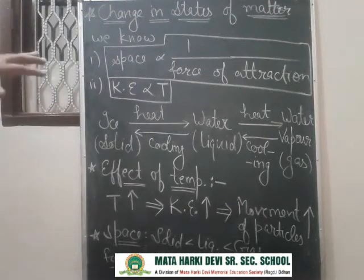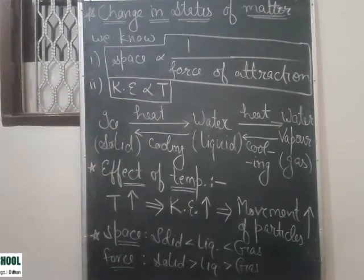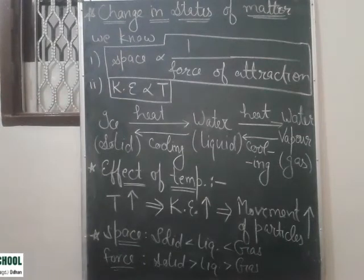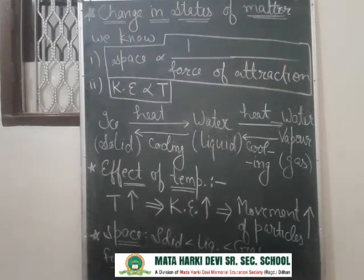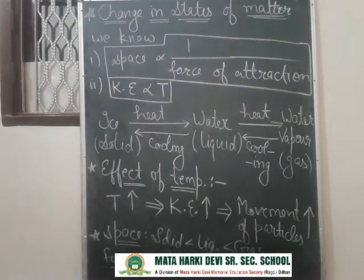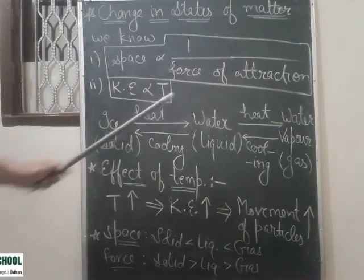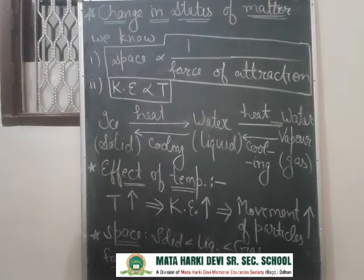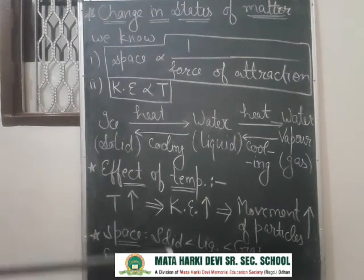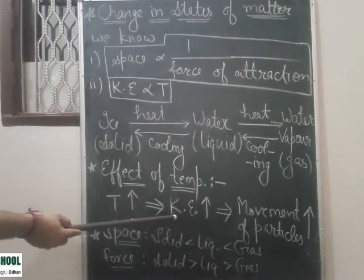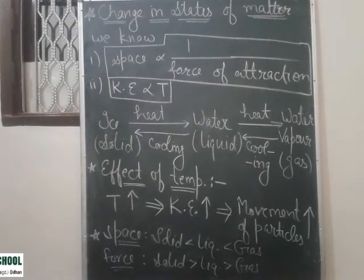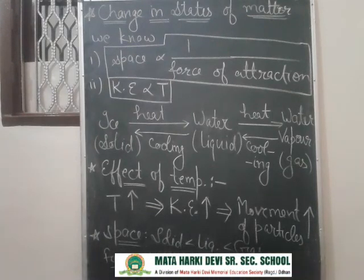Clear! So this whole concept is 'Change in States of Matter.' The temperature at which a solid starts converting into liquid is called the melting point. Now, in change in states of matter, two factors play a role. The first is the effect of temperature: if temperature increases, kinetic energy increases, movement of particles increases, and force of attraction is overcome, causing a change in state.